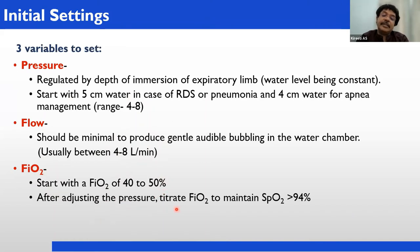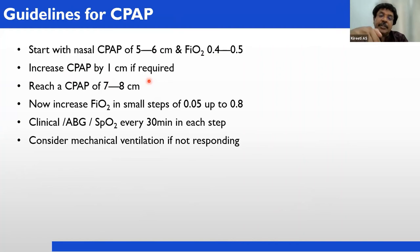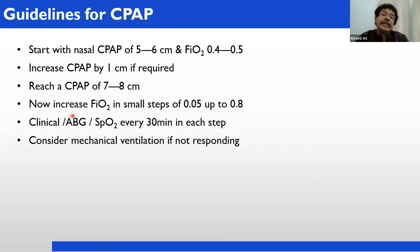After adjusting FiO2, see the pulse oximeter — saturation should be more than 94%. If it is coming down, increase FiO2; if it is coming up, you can adjust the FiO2. Guidelines for CPAP: start nasal CPAP at 5 to 6 centimeters, FiO2 40–50%. Increase CPAP by 1 centimeter if required — maximum up to 7 to 8 centimeters, not beyond 8. Increase FiO2 in small steps of 5% up to 80%. Monitor clinically and check SpO2 every 30 minutes at each step.